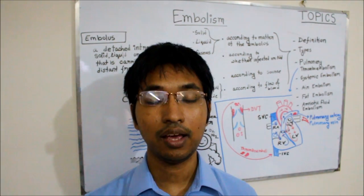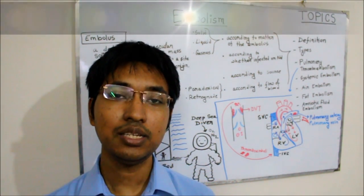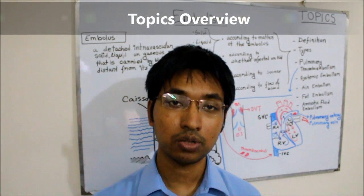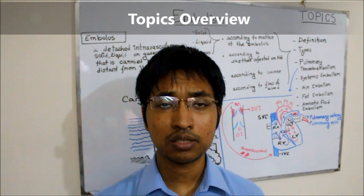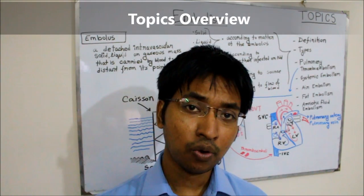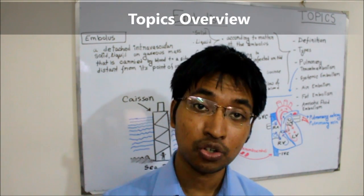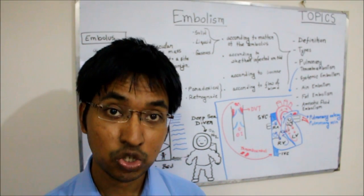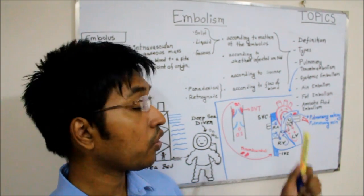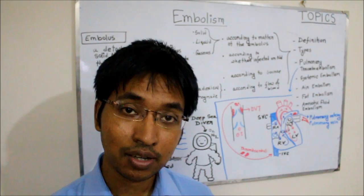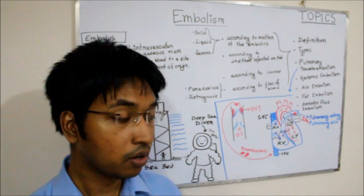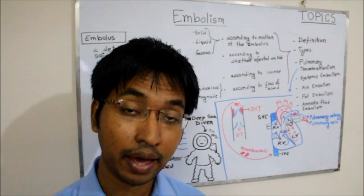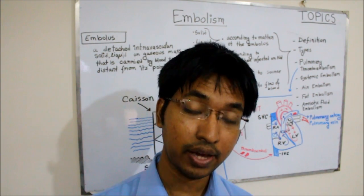Today's topic is embolism. In this video, first we will try to define embolism, then we will discuss its common types, followed by a brief discussion on the important types of embolism, which will include pulmonary thromboembolism, systemic embolism, air embolism, fat embolism, amniotic fluid embolism, etc.